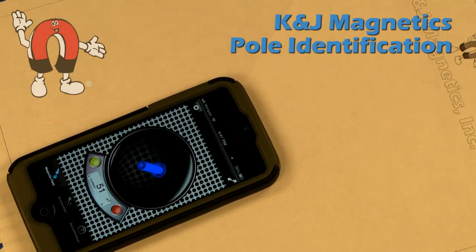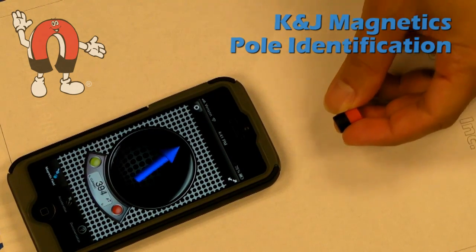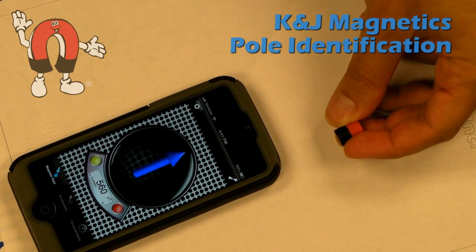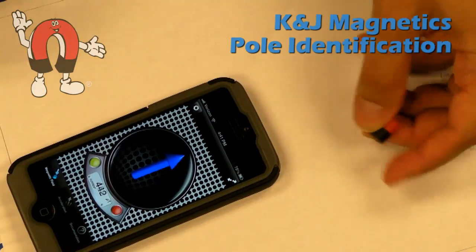The magnet meter app, which shows the direction with an arrow, is a little bit different. It doesn't give positive or negative numbers, but orients the arrow to line up with the magnet. The arrow, like a compass, points to the south pole of a magnet.